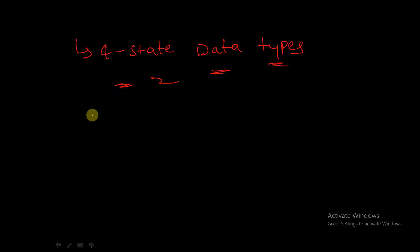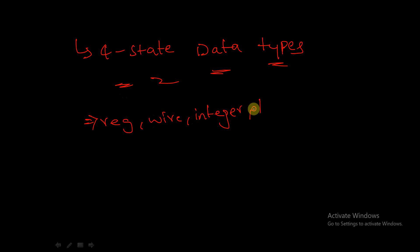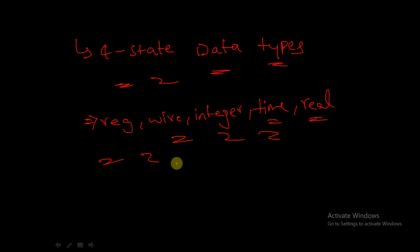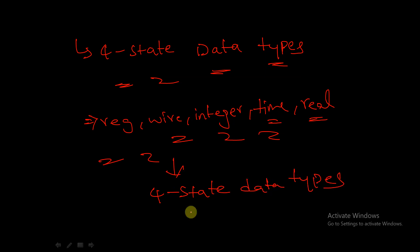We also have reg, wire, integer, time, and real — these are all four-state data types. In Verilog, we have only this type of data type: four-state data types.